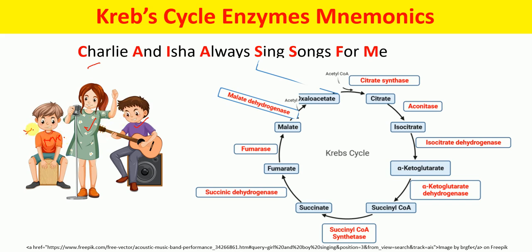With this picture you can remember: Charlie — C refers to citrate synthase; A refers to aconitase; Isha — I refers to isocitrate dehydrogenase; Always — A refers to alpha-ketoglutarate dehydrogenase; Sing — S refers to succinyl-CoA synthetase; Songs — S refers to succinic dehydrogenase; For — F refers to fumarase; Me — M refers to malate dehydrogenase.